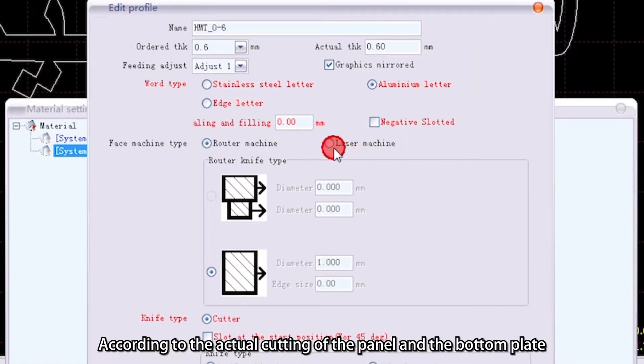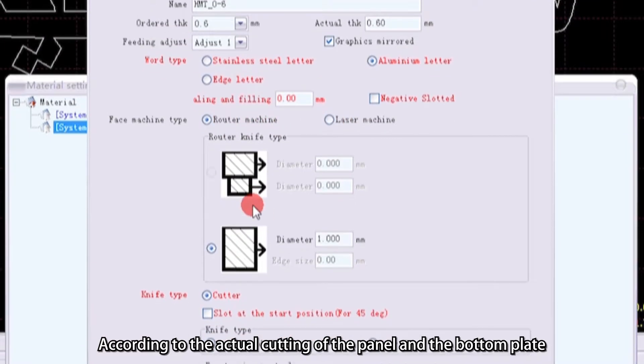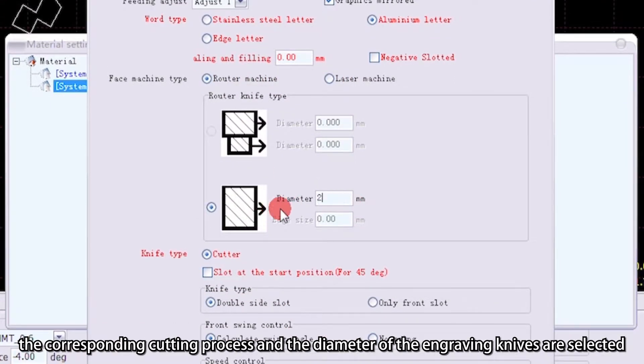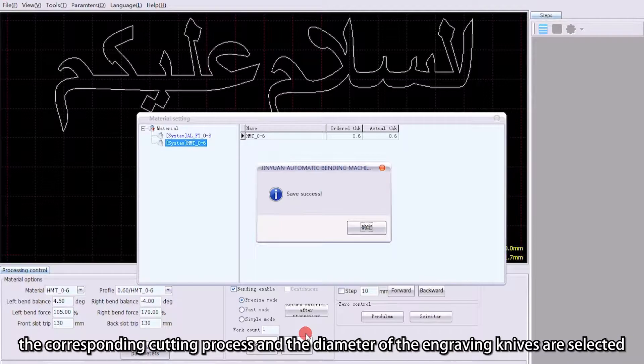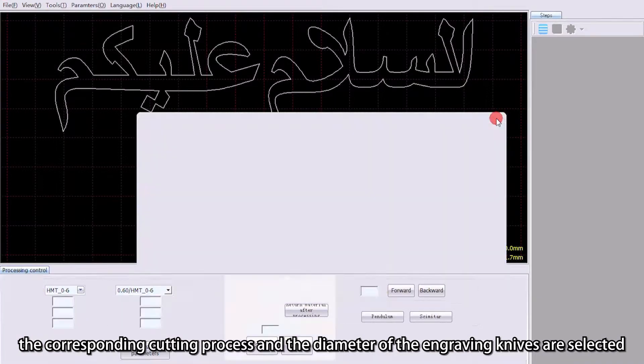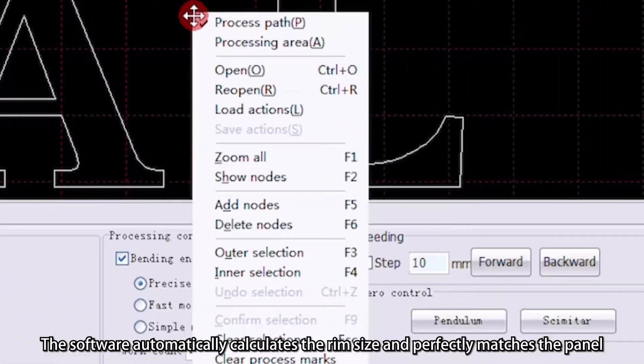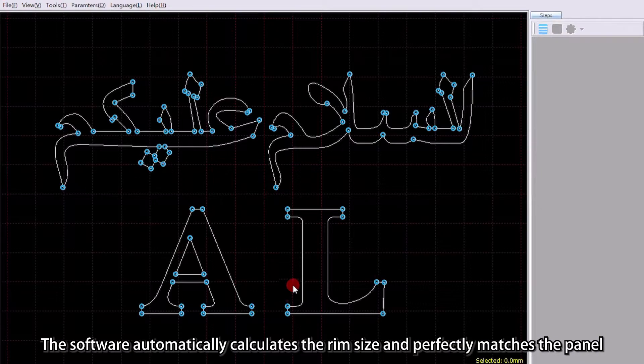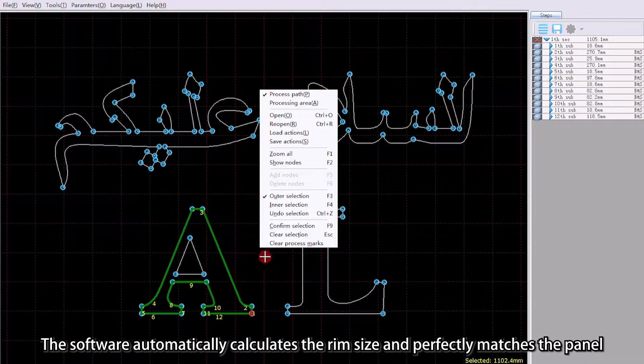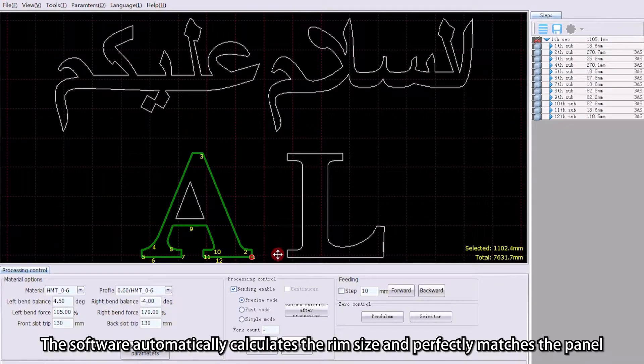According to the actual cutting of the panel and the bottom plate, the corresponding cutting process and the diameter of the engraving knives are selected. The software automatically calculates the rim size and perfectly matches the panel.